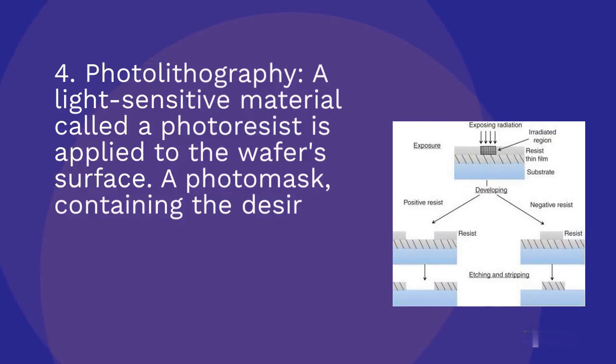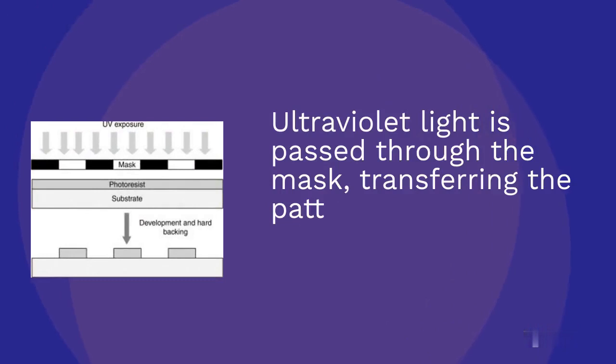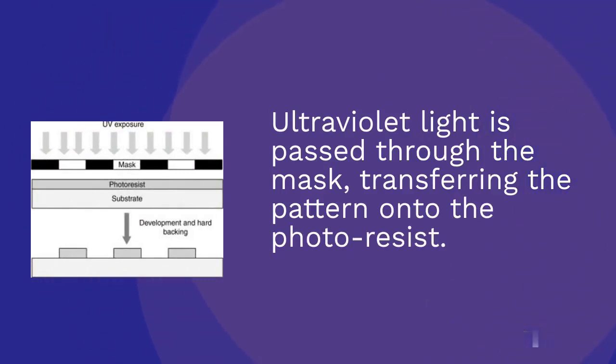Photolithography: A light-sensitive material called photoresist is applied to the wafer's surface. A photomask, containing the desired circuit pattern, is then placed over the photoresist. Ultraviolet light is passed through the mask, transferring the pattern onto the photoresist.